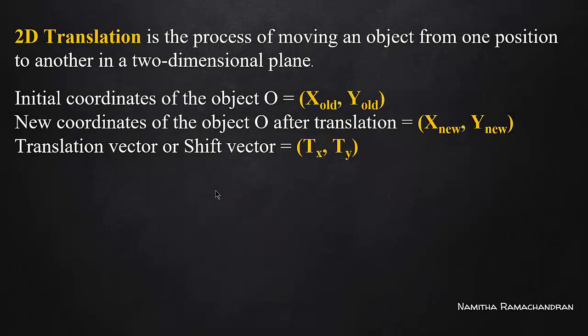The first case is 2D translation. Translation means we need to move an object. The object is in a 2D plane, and each and every point of the object is associated with a particular position. The position is shifted — we change the position of the object. If you apply 2D translation, we change the position of the object. However, the size of the object does not change.